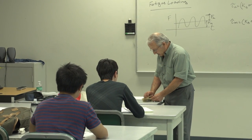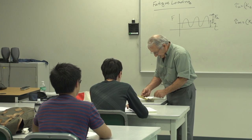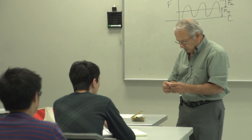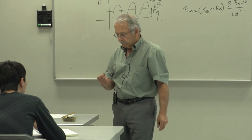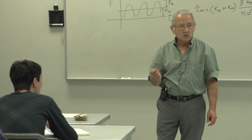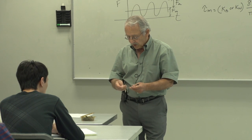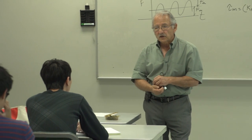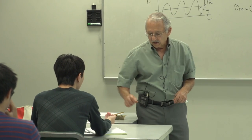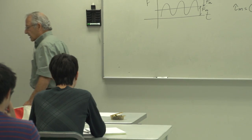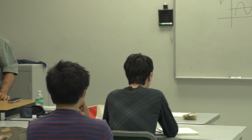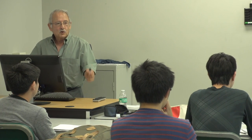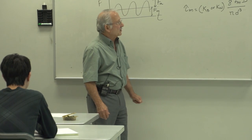I have some springs here to pass around — a representative sample. One is a compression spring with squared and ground ends. One is a tension spring, and one is a torsional spring which we'll take a look at next time. The extension spring has been pulled too far, yielded, and its coils are no longer touching — which can happen to extension springs.